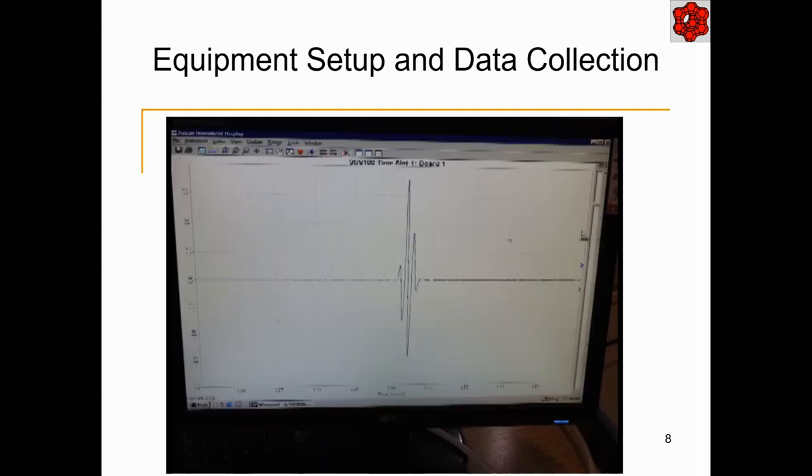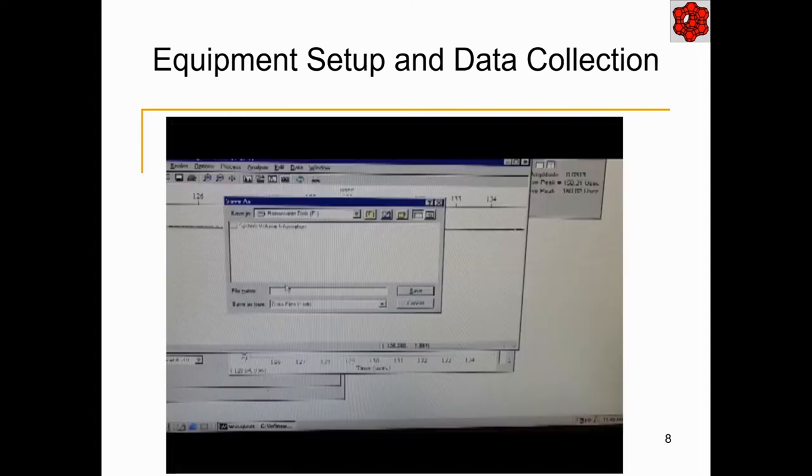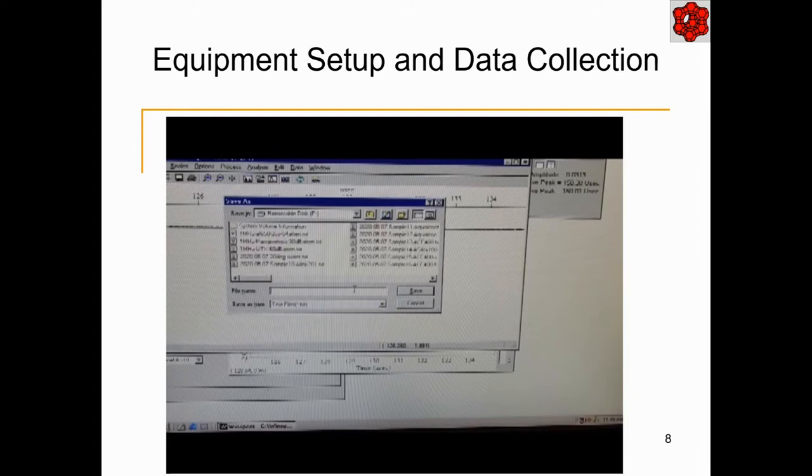The A-scan of the water path without any sample is then captured and saved to a file with suitable information to identify it. In this case, the signal is just the water, so perhaps water 20 degrees could suffice as the file name.